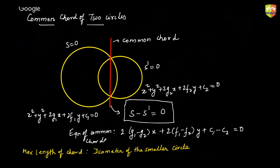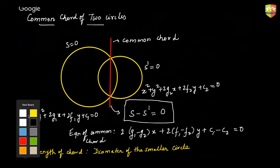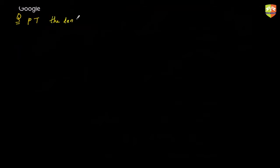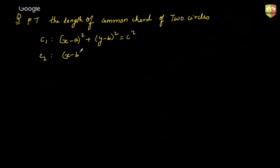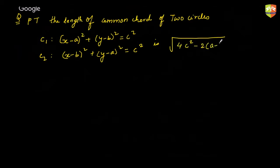Let's take a simple question: prove that the length of the common chord of the two circles given by (x minus a) squared plus (y minus b) squared equal to c squared, and (x minus b) squared plus (y minus a) squared equal to c squared, is equal to the square root of 4c squared minus 2 times (a minus b) squared.